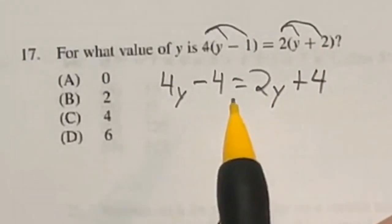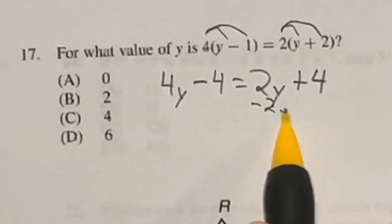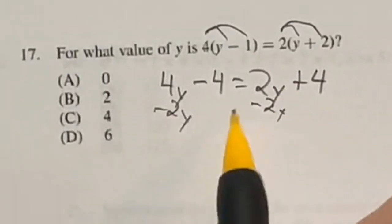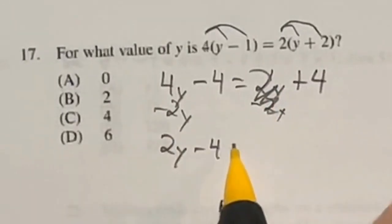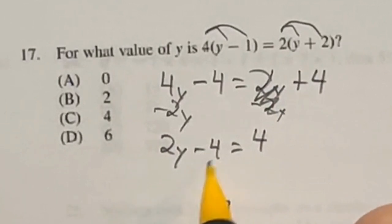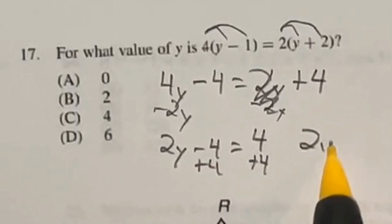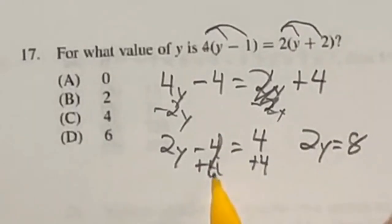Then we need to get all the Ys by itself, so I'm going to subtract 2Y from both sides. That's going to go ahead and cancel these out and leave me with 2Y minus 4 equals positive 4. Then I'm going to go ahead and the opposite of subtraction is adding, so add 4 to both sides, giving me 2Y is now equal to 8 after those cancel out.